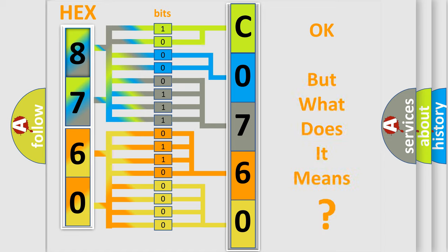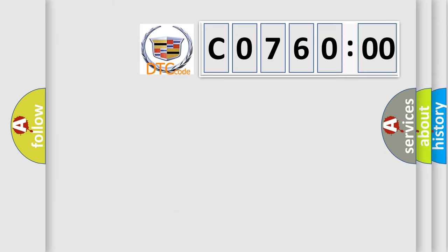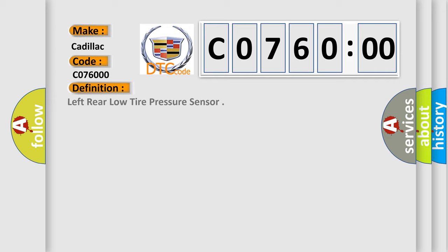We now know in what way the diagnostic tool translates the received information into a more comprehensible format. The number itself does not make sense to us if we cannot assign information about what it actually expresses. So, what does the diagnostic trouble code C076000 interpret specifically for Cadillac car manufacturers?